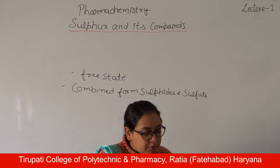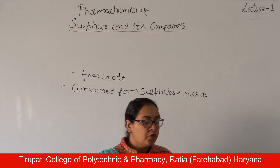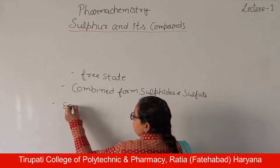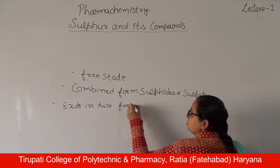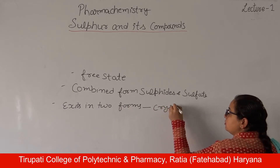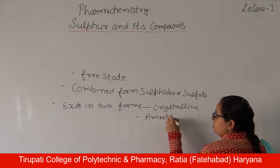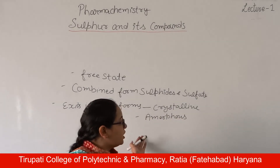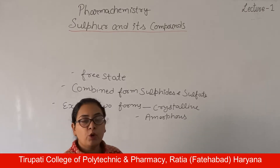Sulphur exists in two forms: amorphous and crystalline. The crystalline form of sulphur has two types: rhombic and monoclinic forms.